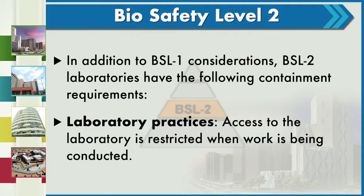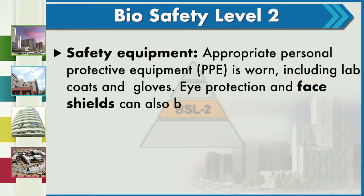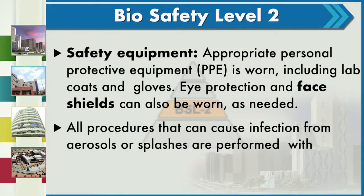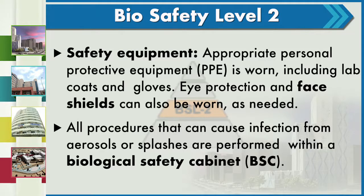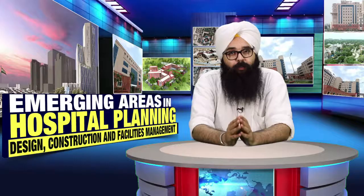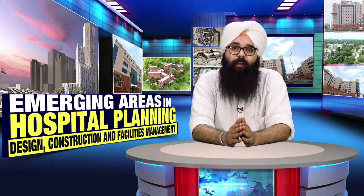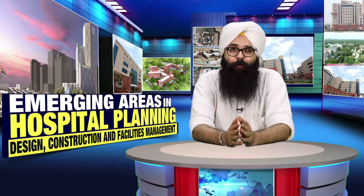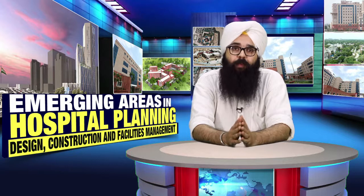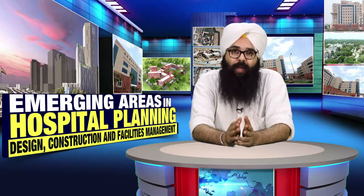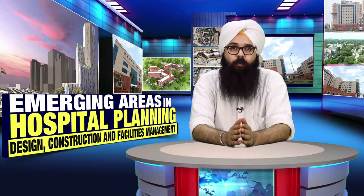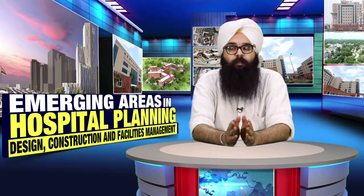Access control is very important in BSL 2. Appropriate personal protective measures are provided including lab coats, eye protection, and face shields, and all procedures are done in a BSC — a biological safety cabinet. A BSC is a cabinet where the air is controlled so that air inside the BSC does not reach the laboratorian. There is no aerosol or splash from the specimen reaching the person working at the BSC.